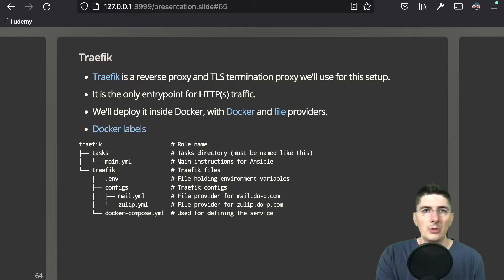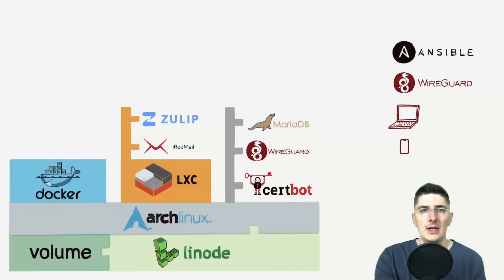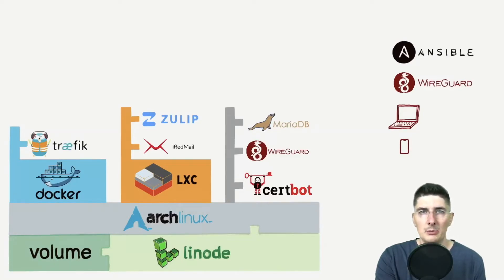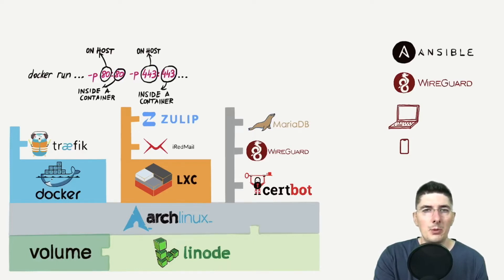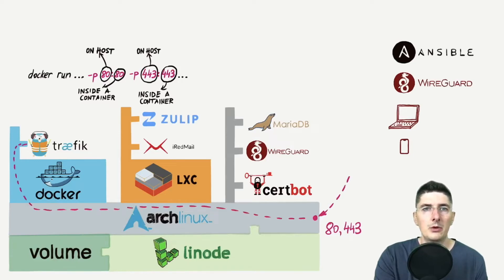Let's go back to the drawing to explain that in a bit more detail. As I said, we'll deploy Traefik as a Docker container. If you are wondering how something inside a Docker container can accept packets coming to the public interface, you should probably re-watch the Docker videos. In short, when you run a container you can map a port on the host — in my case this VPS — to the port inside the container. So all we need to do is map both port 80 and port 443. That way, when something comes to the public interface on either of those ports, it will be forwarded to the Traefik container. A nice thing with Docker is that it will automatically add any necessary firewall rules.